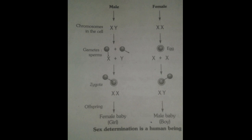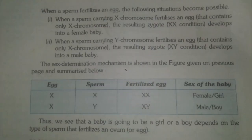The sex determination mechanism is shown in the figure. The whole process in short: if the X chromosome of the male fuses with the female egg, it will form a female child — a baby with XX chromosomes. Whenever the Y chromosome of the male partner fuses with the egg, it will form an XY chromosome baby, and the sex of that baby will be male.